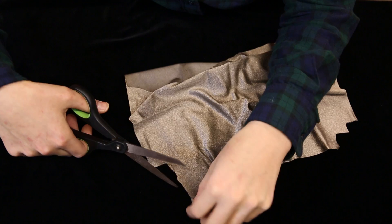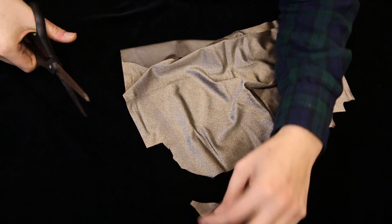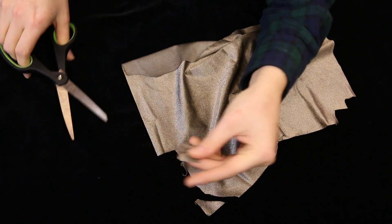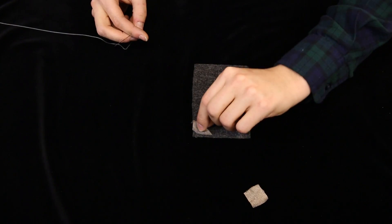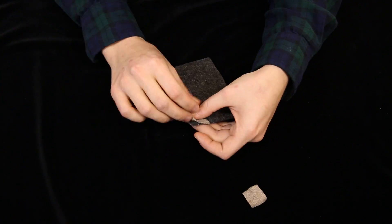Let's start with the momentary push button. Start by cutting two small swatches of conductive fabric. Place one on the very edge of your felt and sew it down using the conductive thread.